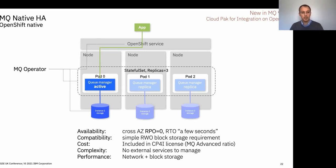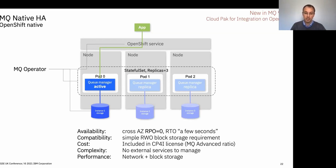Native HA is geared up for the Cloud Pak for Integration environment at the moment. We are aware that customers have expressed interest in having it available elsewhere, but for 9.2.3 it's focused on the OpenShift world in Cloud Pak for Integration. The MQ operator available in that environment has been updated to ensure it can allow you to seamlessly manage your Native HA deployments — it can spin up the containers for you, perform rolling maintenance, and maintain the number of instances available that you need.